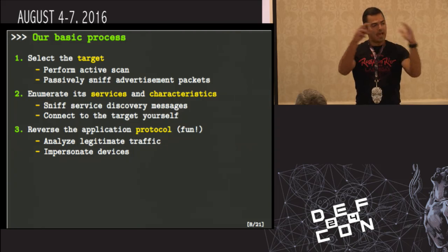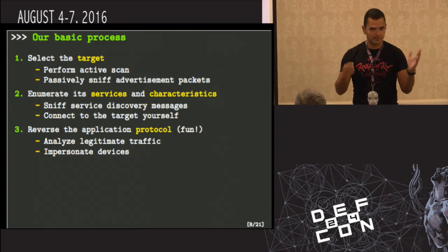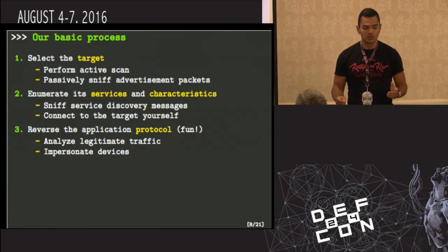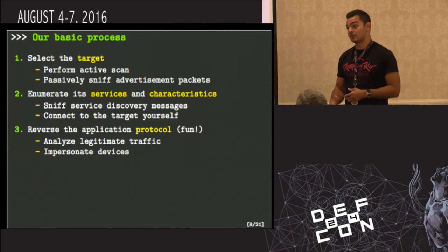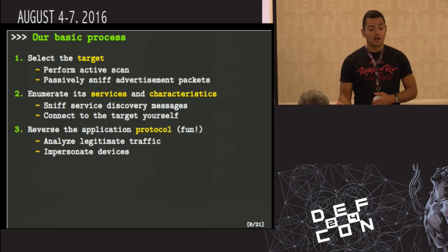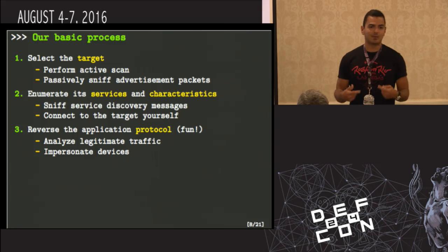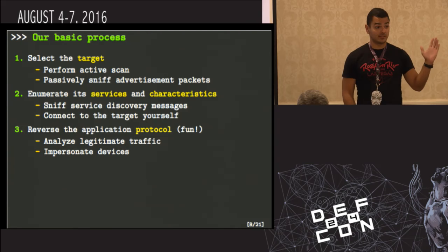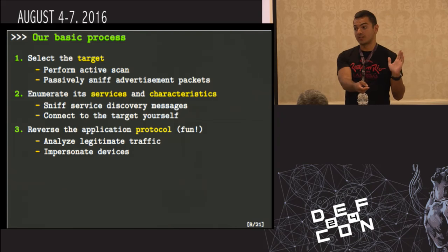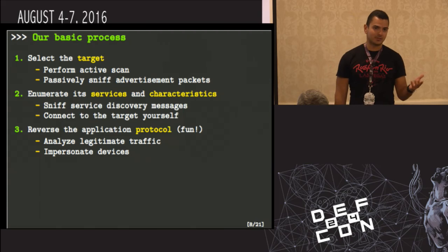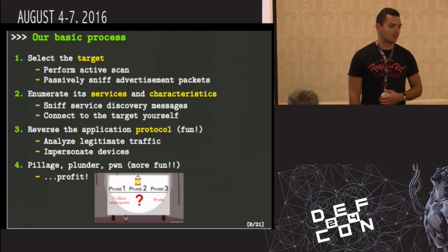Our basic hacking process follows the traditional hacker's methodology. Basically, you have to find a target first. Then you enumerate its services and characteristics — we'll talk about what those mean. Then you reverse the application protocol to figure out what the app is trying to do when it communicates with the device. And if you complete those three steps, you can attack, profit, whatever.